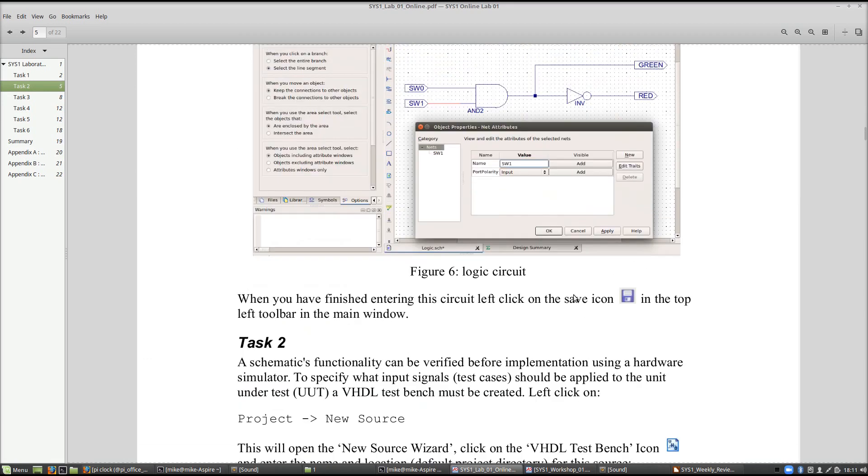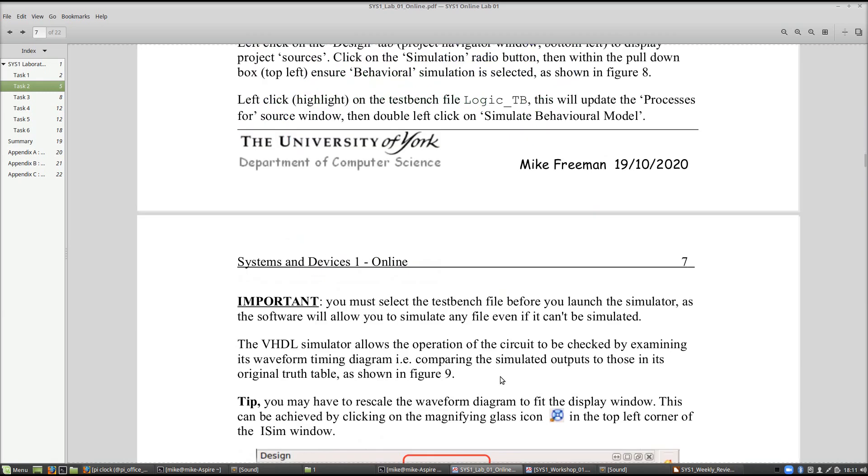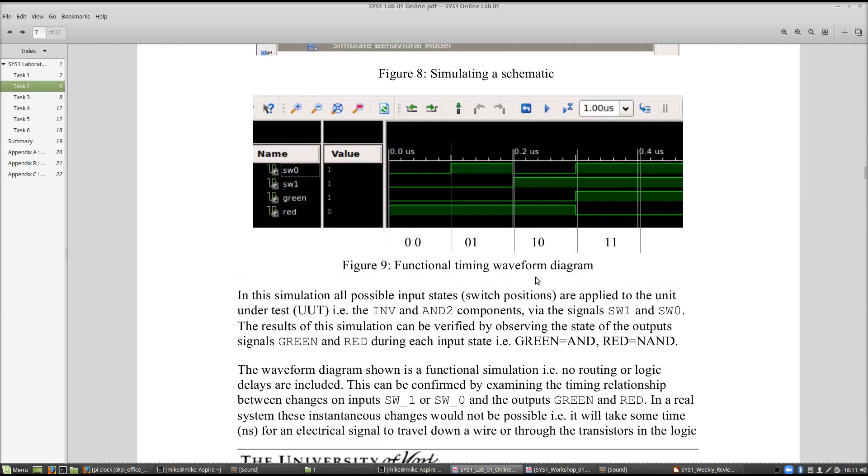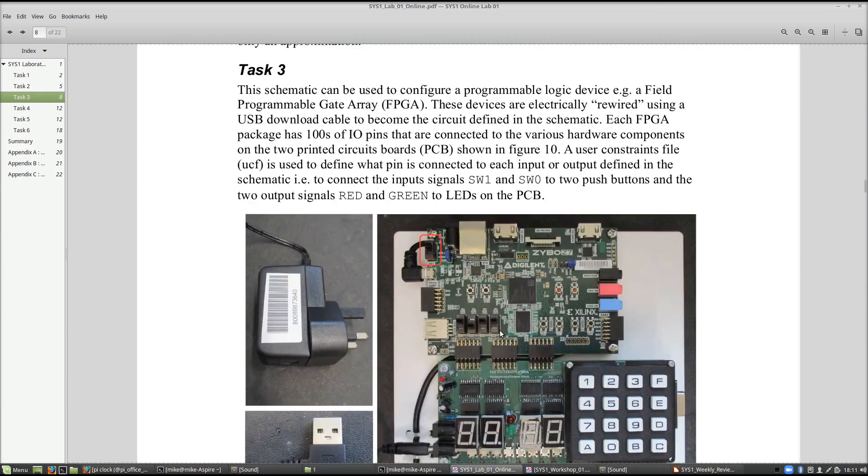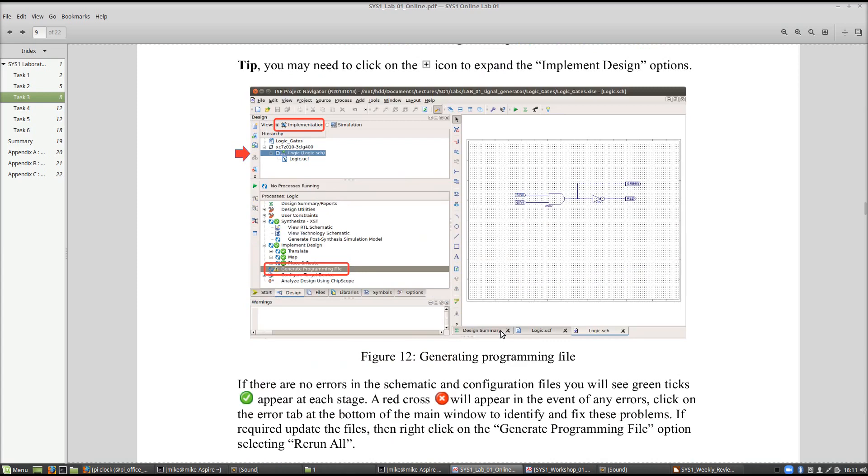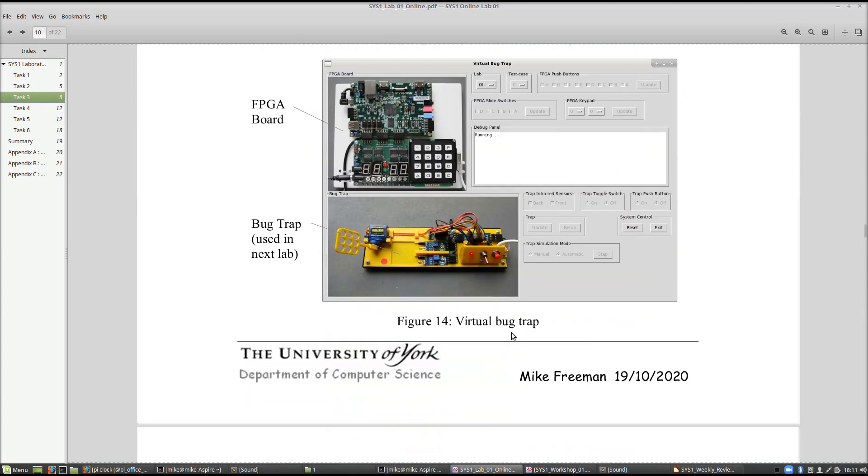Make sure you can draw those schematics, you understand what those test benches are doing, and you understand how those simulation traces show that the circuit is working - the magical green squiggles. If we were in the lab you would download it, but we've got the virtual bug trap which allows you to get a visual view of what you would have seen in the labs.